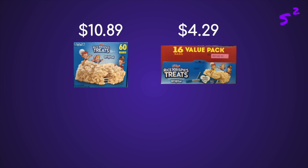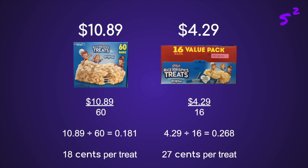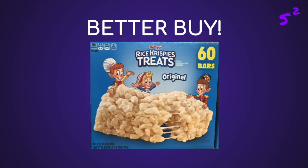The first step to solving this problem is to create rates for each item. The money will be the numerator for each rate, and the number of treats will be the denominator. The next step is to divide the numerators by the denominators. So 10.89 divided by 60 equals 0.181, and 4.29 divided by 16 equals 0.268. But since we're dealing with money, we have to round to the nearest hundredth. The box with 60 Rice Krispie Treats will cost 18 cents per treat, and the box with 16 Rice Krispie Treats will cost 27 cents per treat. So we can see the better buy is the box with 60 bars.